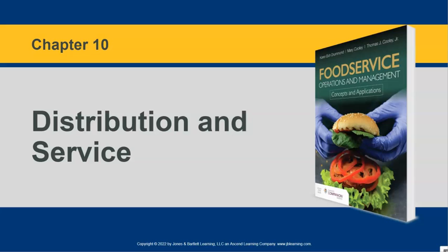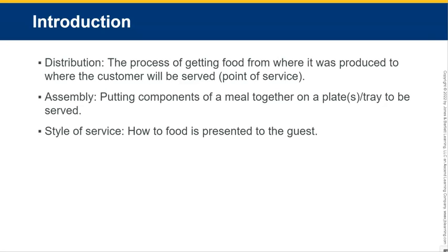Today we'll be discussing distribution and service. Distribution, assembly, and style of service are three different things. When we're talking about distribution, we're talking about the process of getting food from where it was produced to where the customer will be served, which would be called the point of service. It's physically taking food from wherever it's being cooked, made, or assembled and bringing it to the customer.